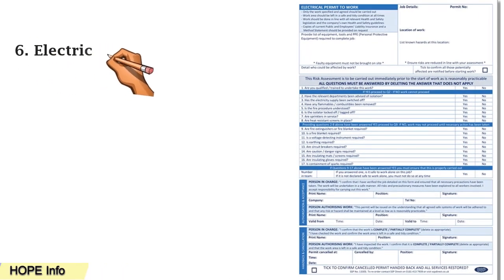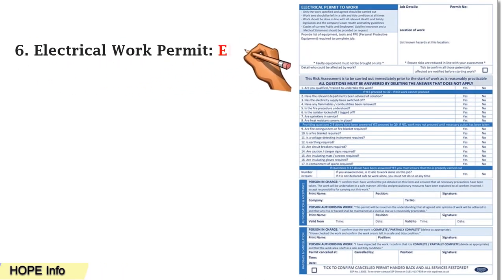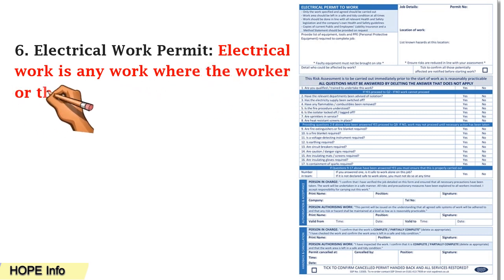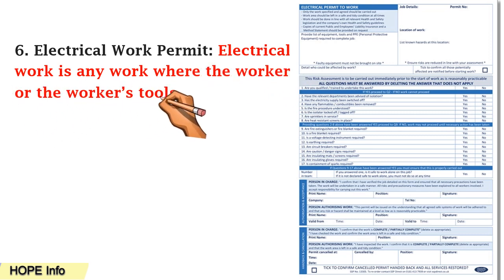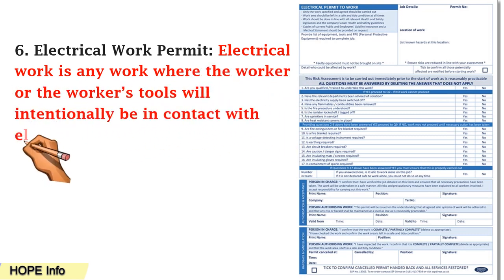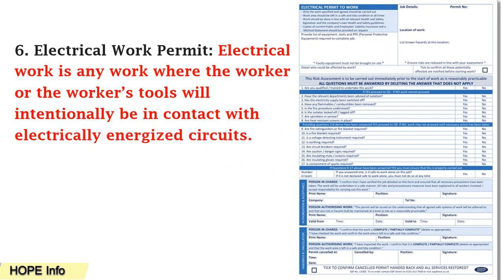Number six is the electrical work permit. An electrical work permit is required for any work where the worker or the worker's tools will intentionally be in contact with electrically energized circuits. When working with electrical equipment or electricity, you are required to open this type of permit.